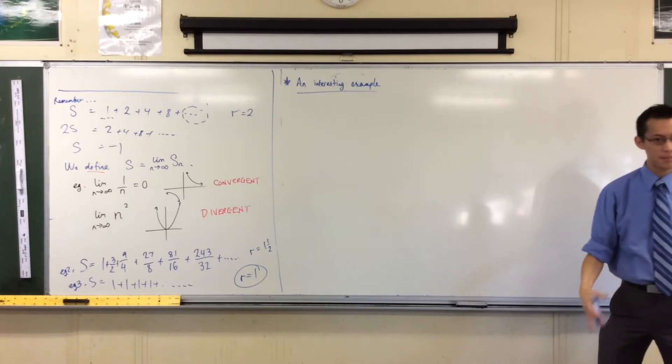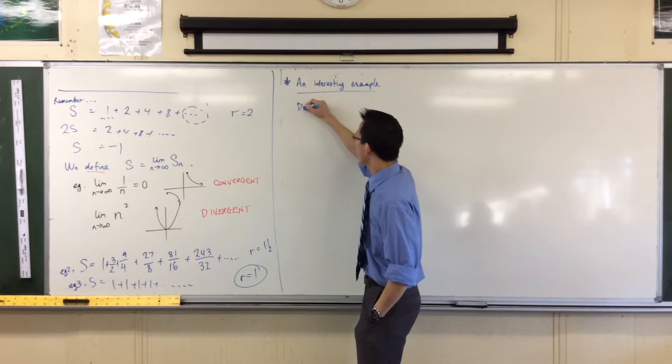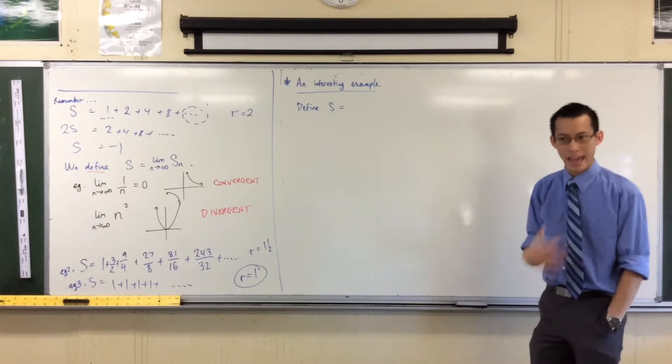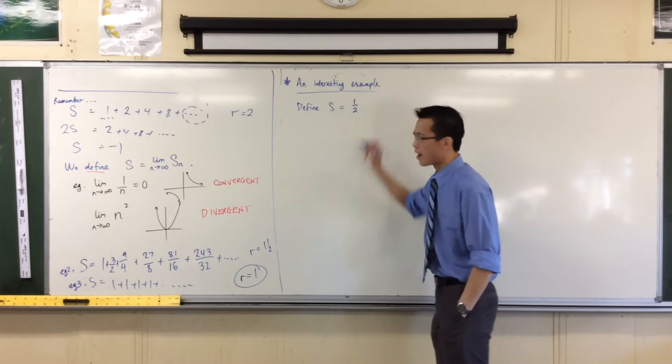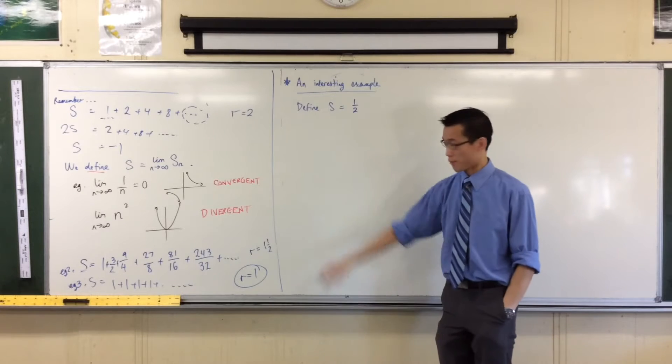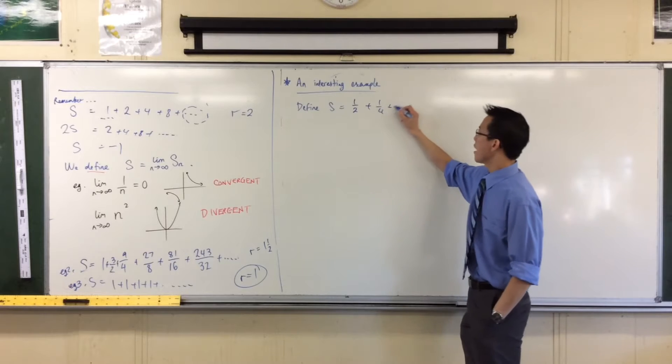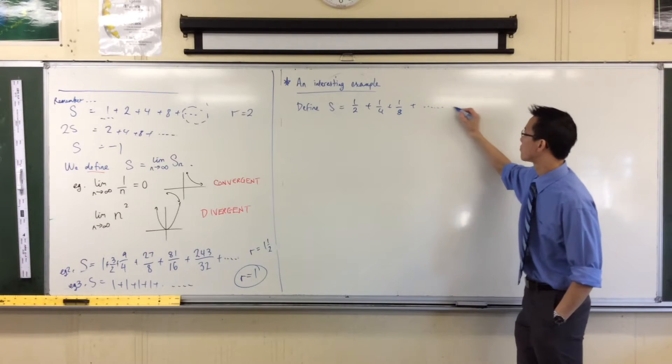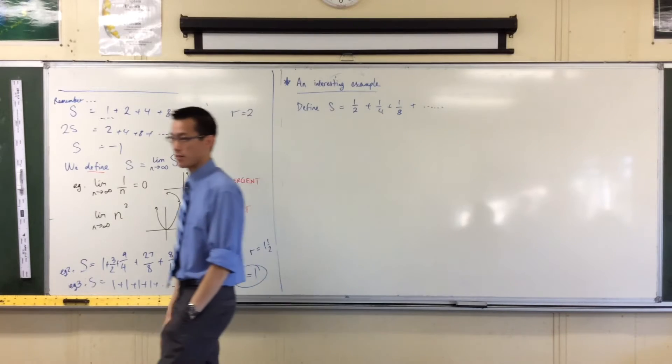This will be our initial example for something that works. So let's define S to be—note this is not S_n, it's not a partial sum, this thing is going to go forever. I'm going to start at half this time, you will see why later on, rather than one like I've been starting at all these times. And I'm going to make my ratio also a half.